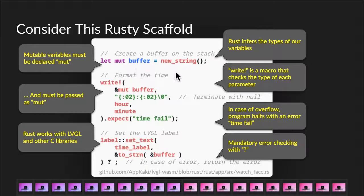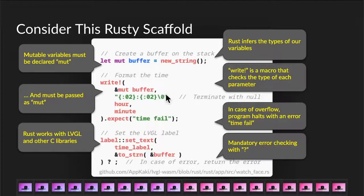Here's how we declare variables in Rust. Notice that we use a keyword here, mut, meaning mutable. Mutable means this thing can be changed. The rule in Rust is that whatever needs to be changed needs to be declared as mutable, and when you pass it into a function, it needs to be passed in with the mut option. So we create a buffer here. We write the hour and the minute into the buffer using a format string here. Write is actually a macro. It checks whether hour matches the format here and minute matches the format here. In case this string overflows the buffer, it will return an error — that's what expect time field says.